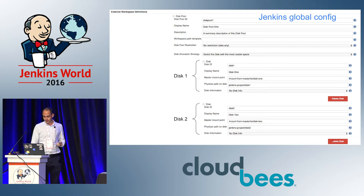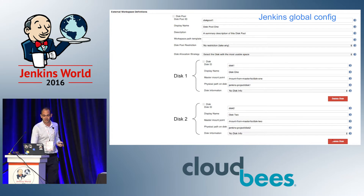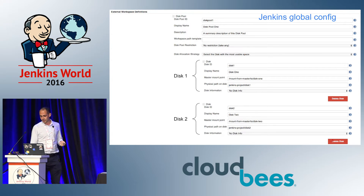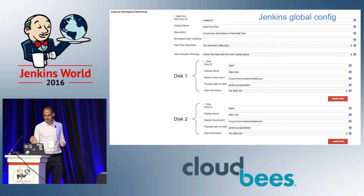In this disk pool I have defined two disk entries, each of them having a disk ID, a display name, and a master mount point — which is the mounting point from the Jenkins master to the disk. There is also a physical path on disk, which is an optional parameter used for workspace path computation on the disk. It has a help file that shows how the workspace path gets computed. Optionally, we can also provide disk information for some advanced features.